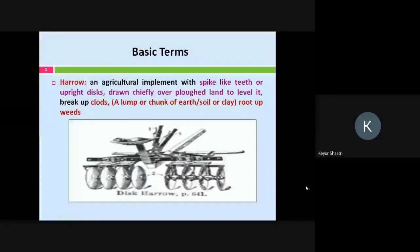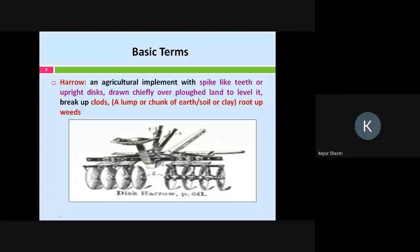This is the picture or photograph of a harrow. A harrow is considered to be an agricultural implement with spike-like teeth. These spike-like or upright teeth are basically drawn for plowing the land. All the clods which are present — a clod being a lump or chunk of earth, soil, or clay — you have to carry out the process of harrowing to root up the weeds. Whatever weeds are present along with the crop have to be removed and separated. For that, harrows are used and the harrowing technique is followed.